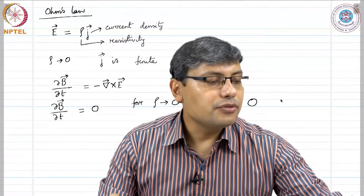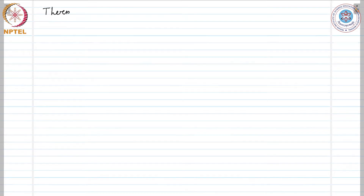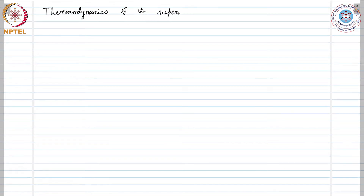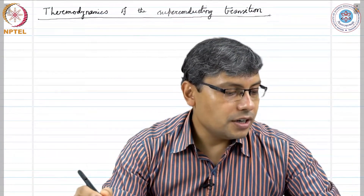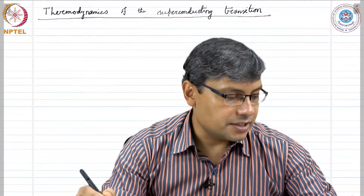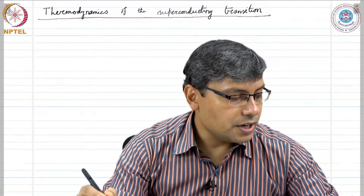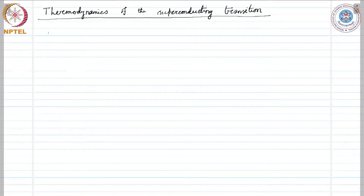Let us discuss the thermodynamics of the superconducting transition. The transition between the normal and superconducting states is thermodynamically reversible. We treat a type 1 superconductor with a complete Meissner effect, that means the magnetic field equals 0 inside the superconductor.